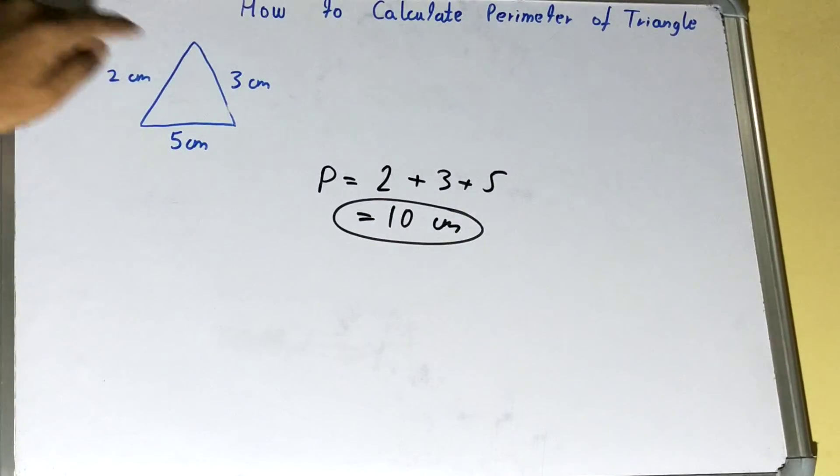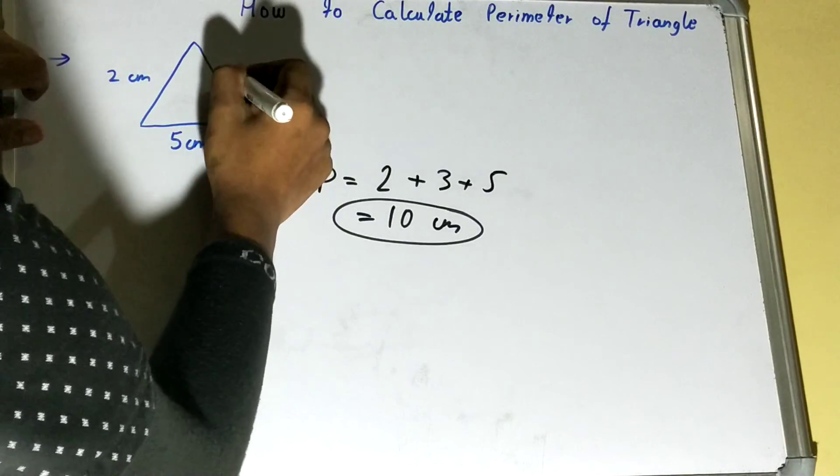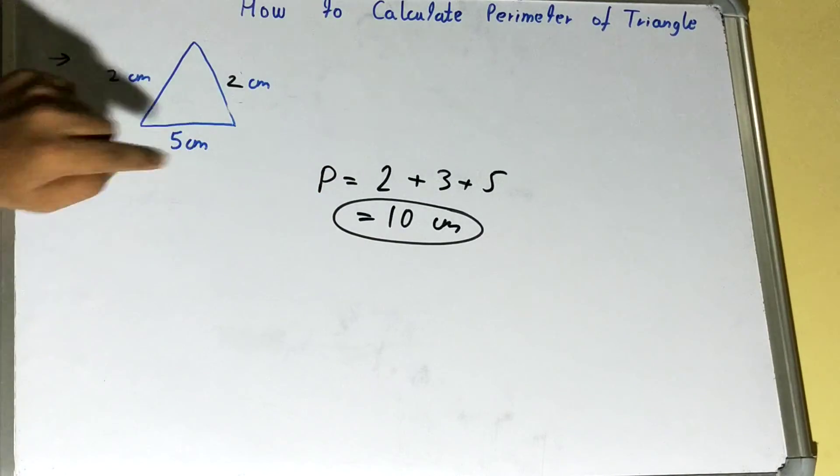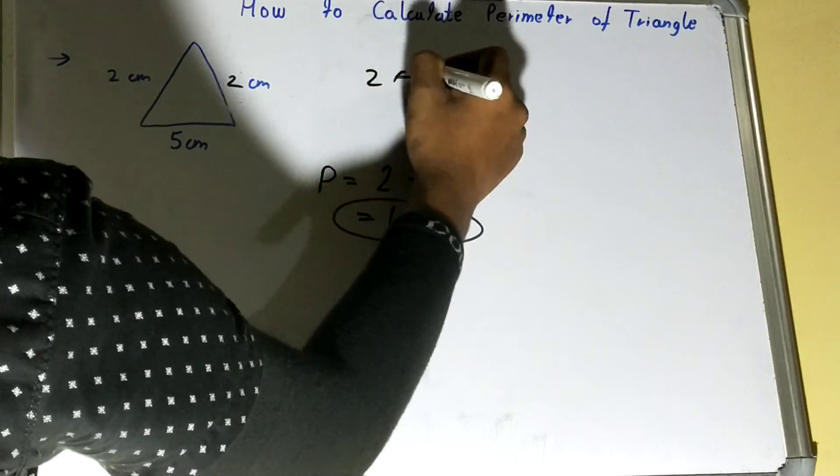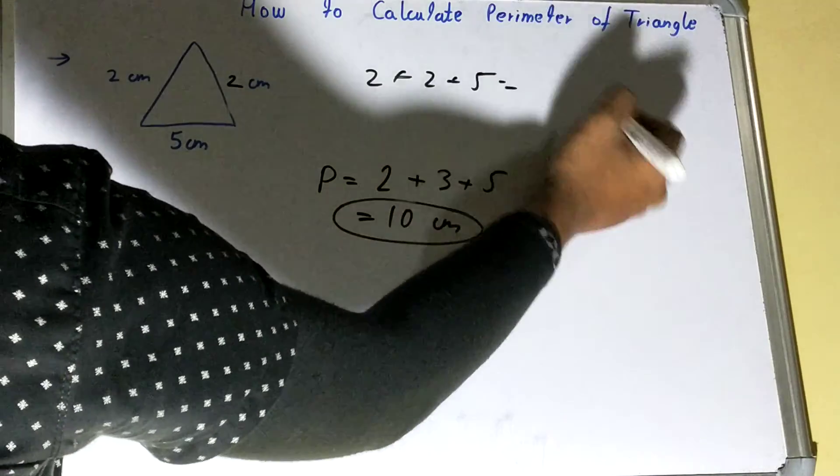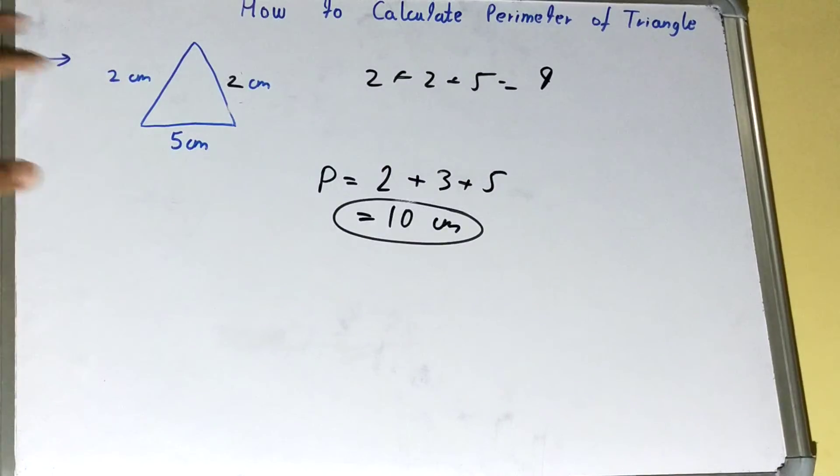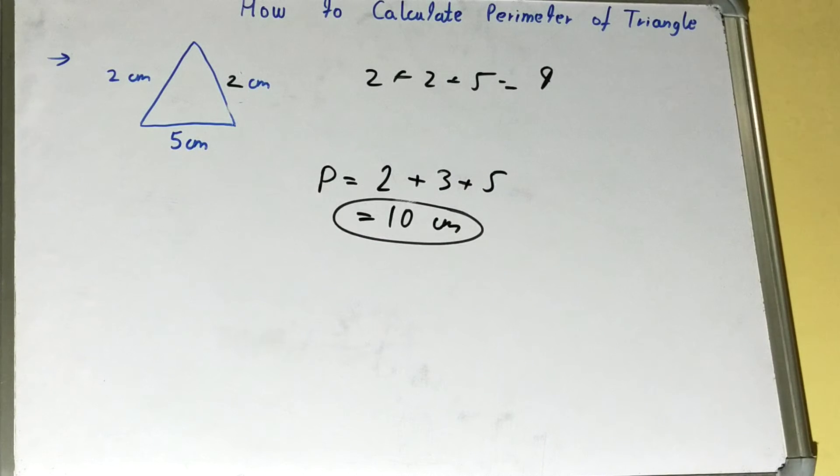Even if it was an isosceles triangle, we would have done the same way - that is 2 plus 2 plus 5, we would have got 9, right? So the principle or the approach is the same for calculating the perimeter of a triangle - that is you add all the sides of a given triangle to find out the perimeter.